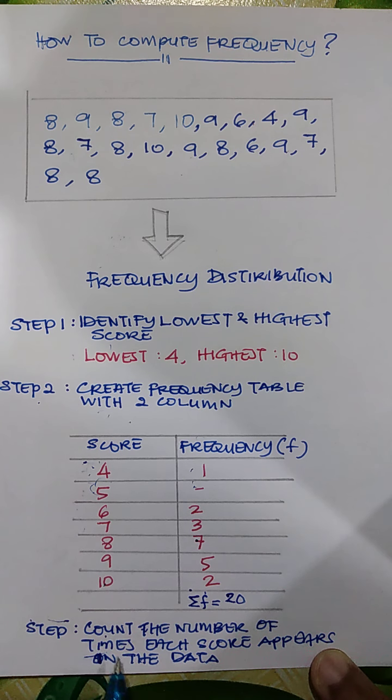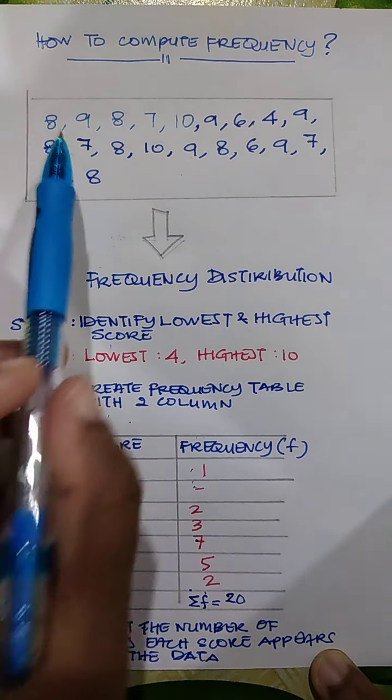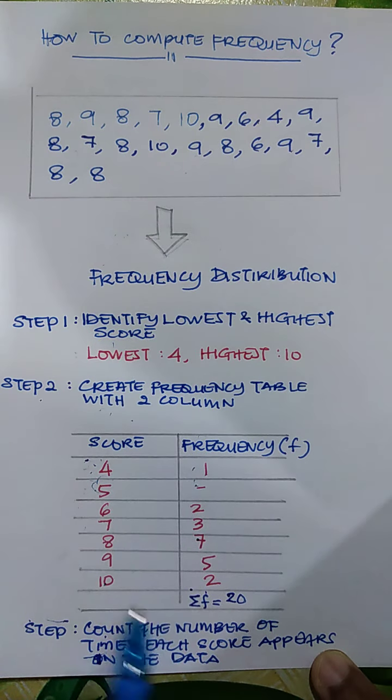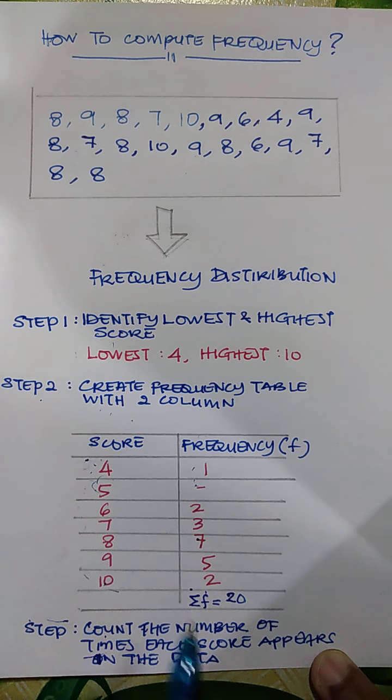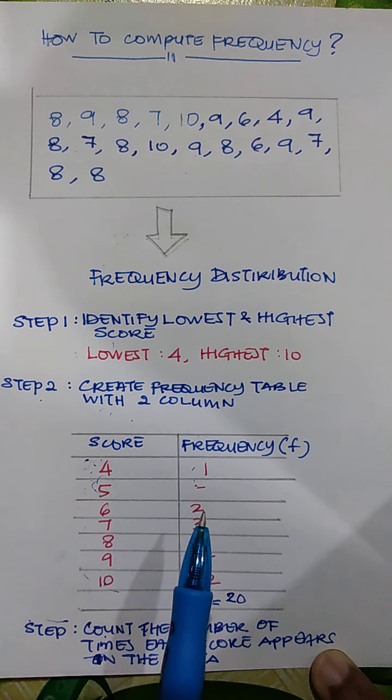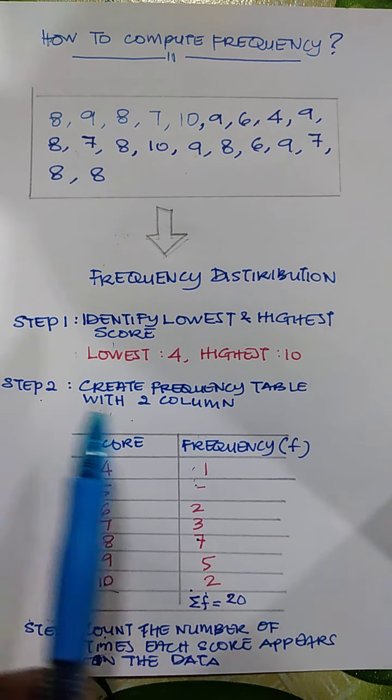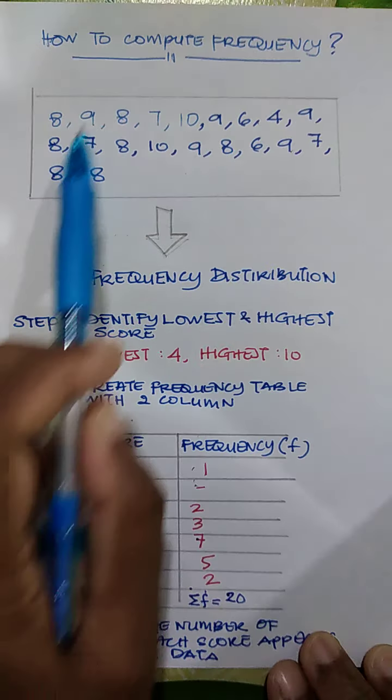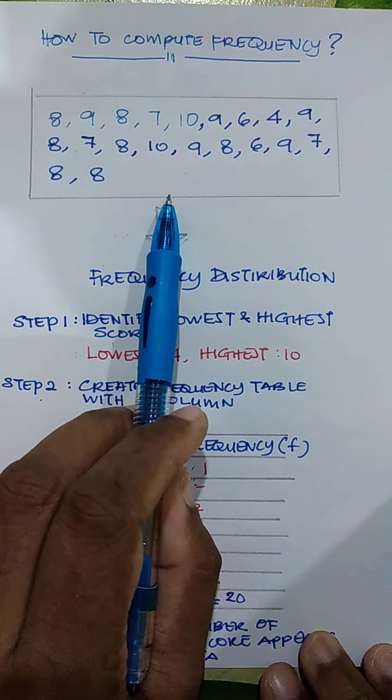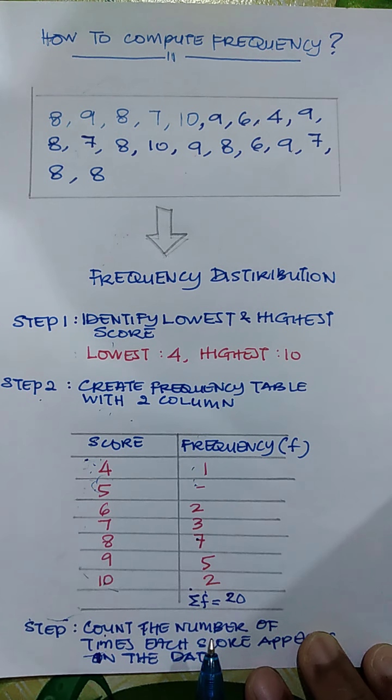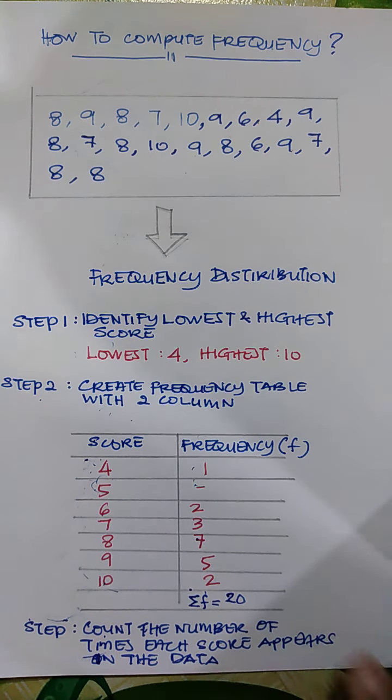So when you add them up you will get 20. Step 3 was actually what we did—count the number of times the score appears on your data, which is the frequency. So when you add them up you will get 20. So imagine from this data you actually transformed to a much simpler table format. From here you can quickly know which is the most frequently occurring score. Which one? Number 8, because it appears seven times. It appears the most times compared to any of the scores. But when we just look at these scores without organizing it, you are unable to identify which one is occurring the most frequently. Thank you.